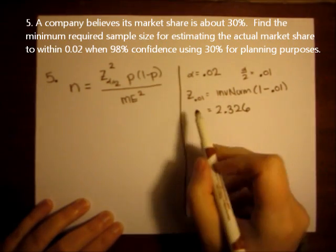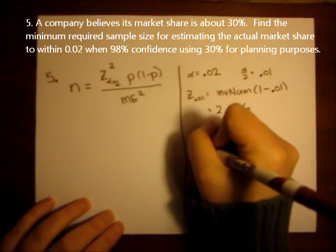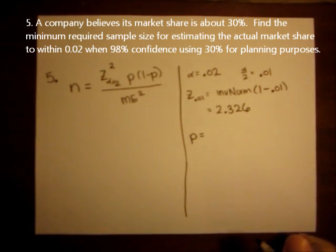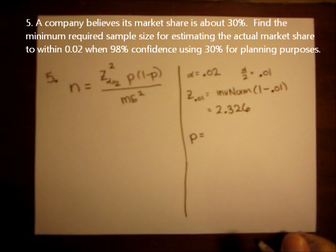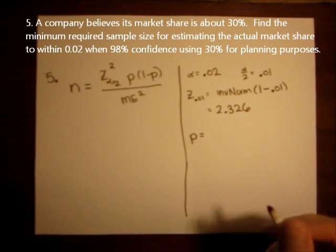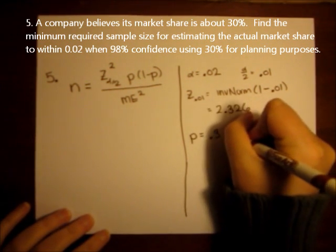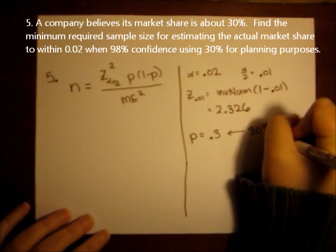So I needed to find my z value. The p that I use — when I have a proportion in mind that I'm going to use for planning purposes, that's going to be my p. So using 30% for planning purposes means p is going to be .3.